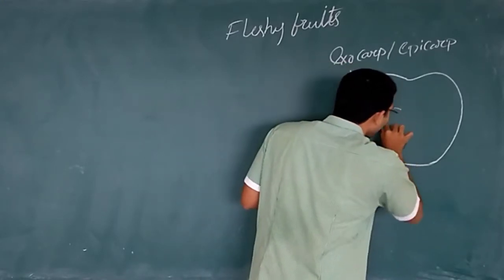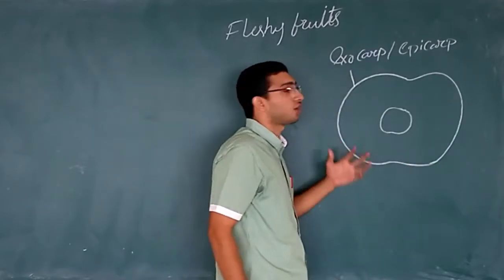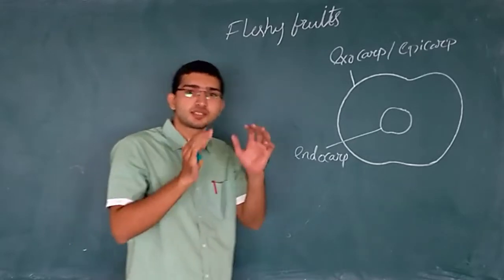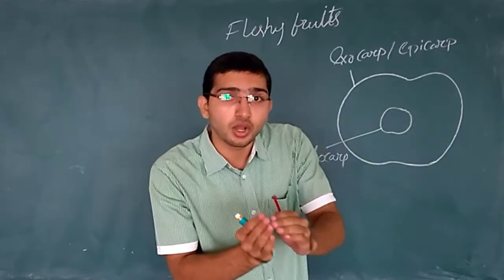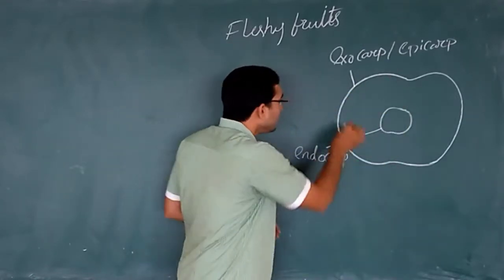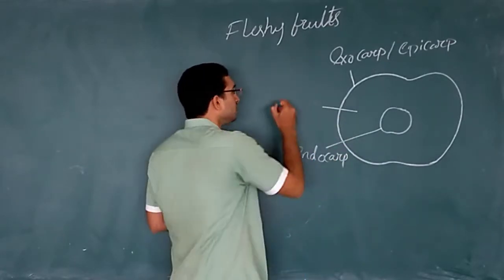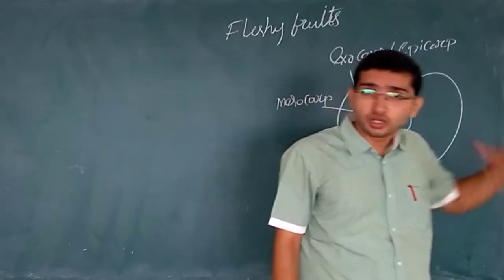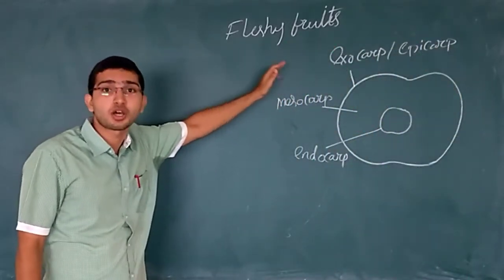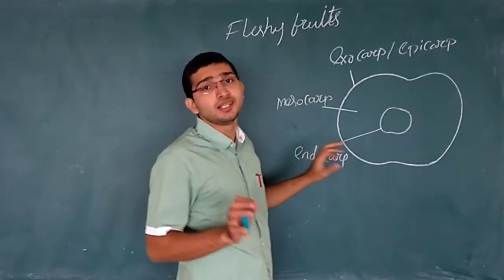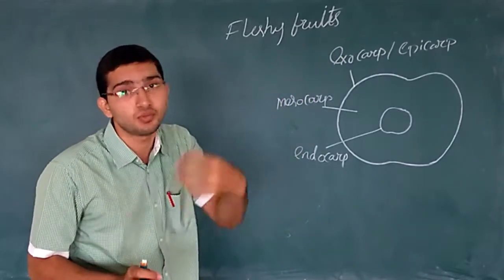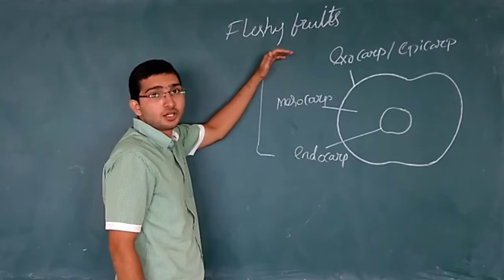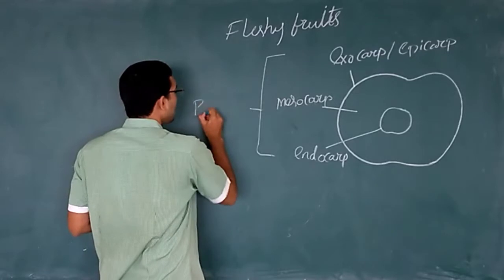Inside you can observe the hard seed, and that inner layer is the endocarp. Between the epicarp and the endocarp is the mesocarp, which is mostly fleshy. So the outer is the exocarp, the middle is the mesocarp, and the inner is the endocarp — these are the three layers. Together, these three layers are termed the pericarp.